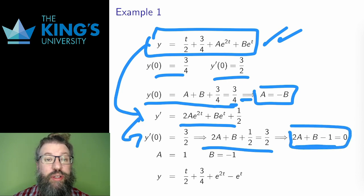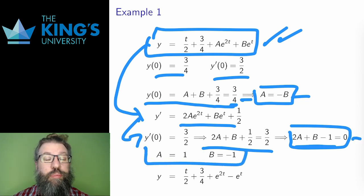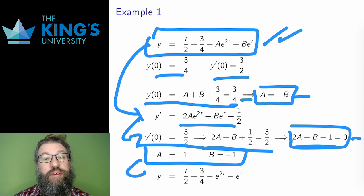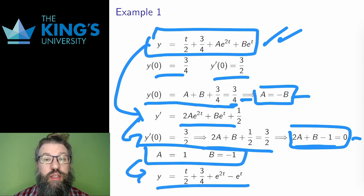Again, I have a linear system of two equations in two variables, and this is solved by a equals 1 and b equals negative 1. And finally, I can put it all together. This is the unique function that solves the DE with the initial conditions as given.